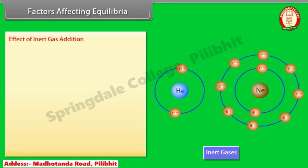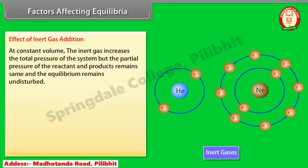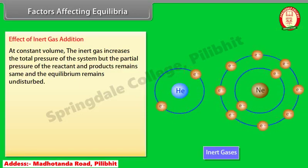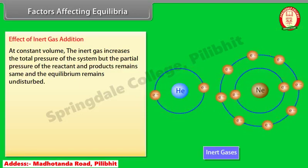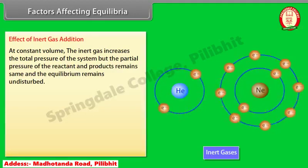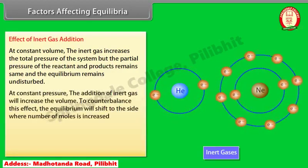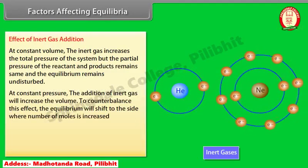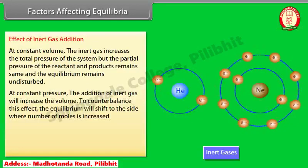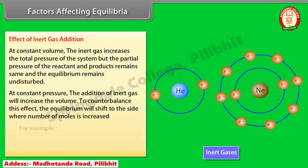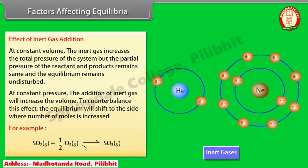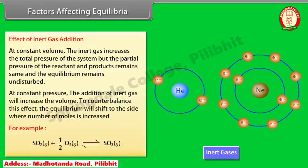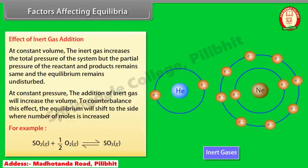Effect of inert gas addition: at constant volume, the inert gas increases the total pressure of the system, but the partial pressure of the reactants and products remains the same, so the equilibrium remains undisturbed. At constant pressure, the addition of an inert gas will increase the volume, and to counterbalance this effect, the equilibrium will shift to the side where the number of moles is increased. For example, the addition of inert gas at constant pressure will push the equilibrium in the backward direction.